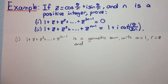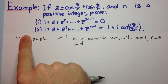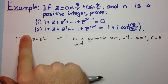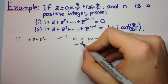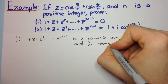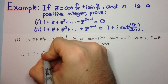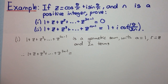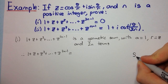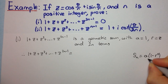How many terms are there? Well, z to the power 1 has one term, z² has two terms, z³ has three terms, all the way up to z^(2n−1), which gives 2n−1 terms. But we have the extra 1 out the front, so that's another term, giving us 2n terms total. Therefore, our sum has a closed formula: the sum of n terms is a·(1 − r^n) / (1 − r).